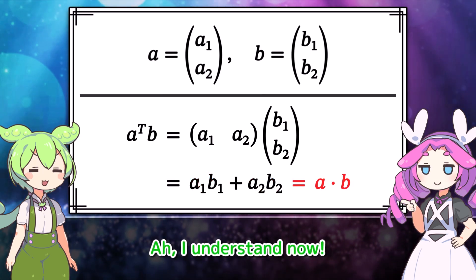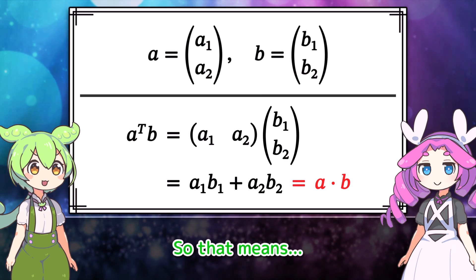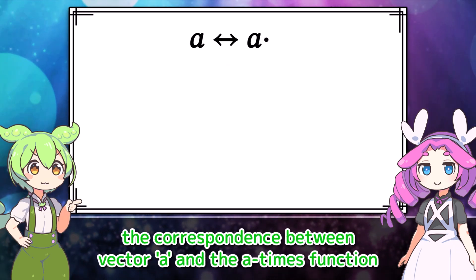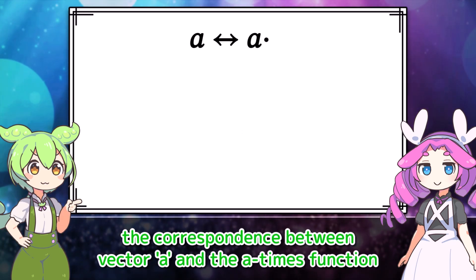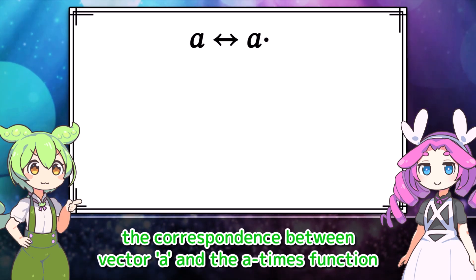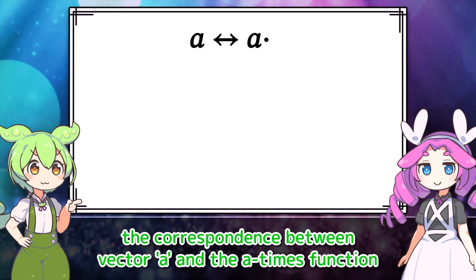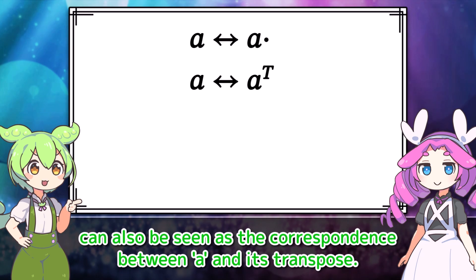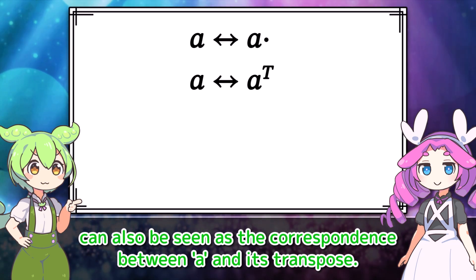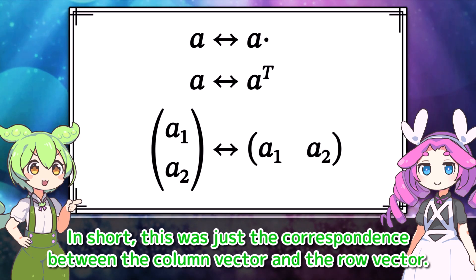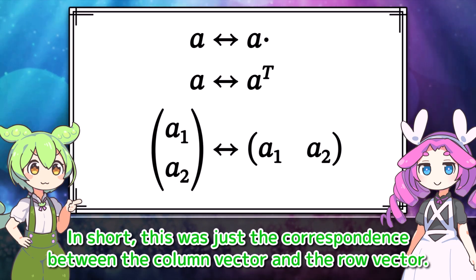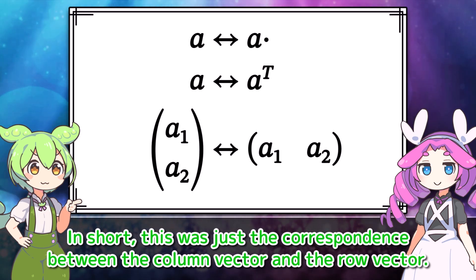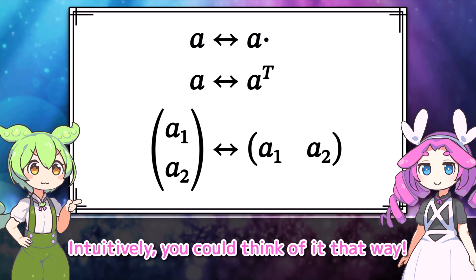To be precise, we're treating a one-by-one matrix as a number here, and this matches the dot product of A and B. So that means the correspondence between vector A and the A times function can also be seen as the correspondence between A and its transpose.